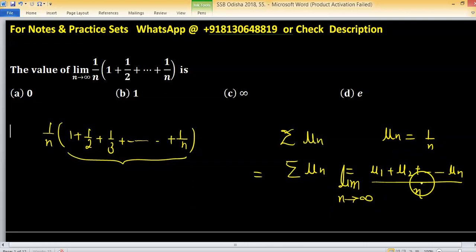This is coming from Cauchy's first theorem. Cauchy's first theorem says if limit of un equals to l, then limit of average will also be l.